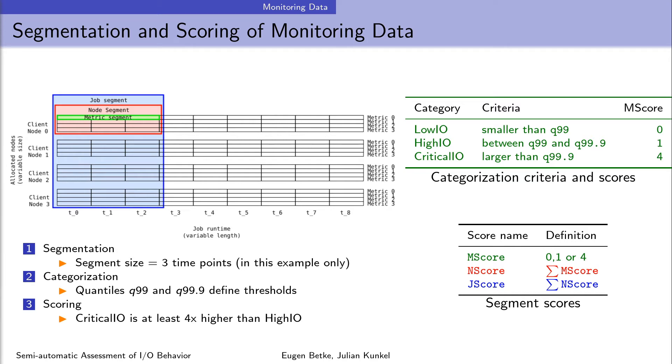The third operation assigns M scores to the categories. We assign zero to the low category because it is a neutral element in addition and will be ignored later in the calculations. To the high I/O category we assign one to consider it in calculations. And we assign four to critical I/O category because we could observe that performance of the critical I/O category was at least four times higher than for the high I/O category. And to make the calculations fair, the weight must be also at least four times higher.